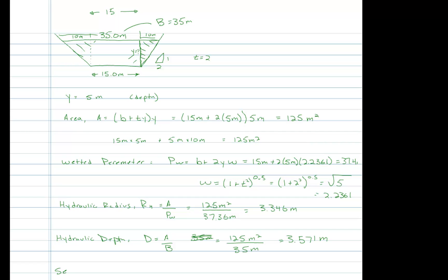And lastly, section factor. M is A times the square root of the hydraulic depth. And so the cross-sectional area, 125 square meters, hydraulic depth was 3.571 meters, and 236.2. And the units on this are a little bit strange, the units on this are meters to the 2.5 power. Alright, so that concludes the example for the trapezoidal geometry.